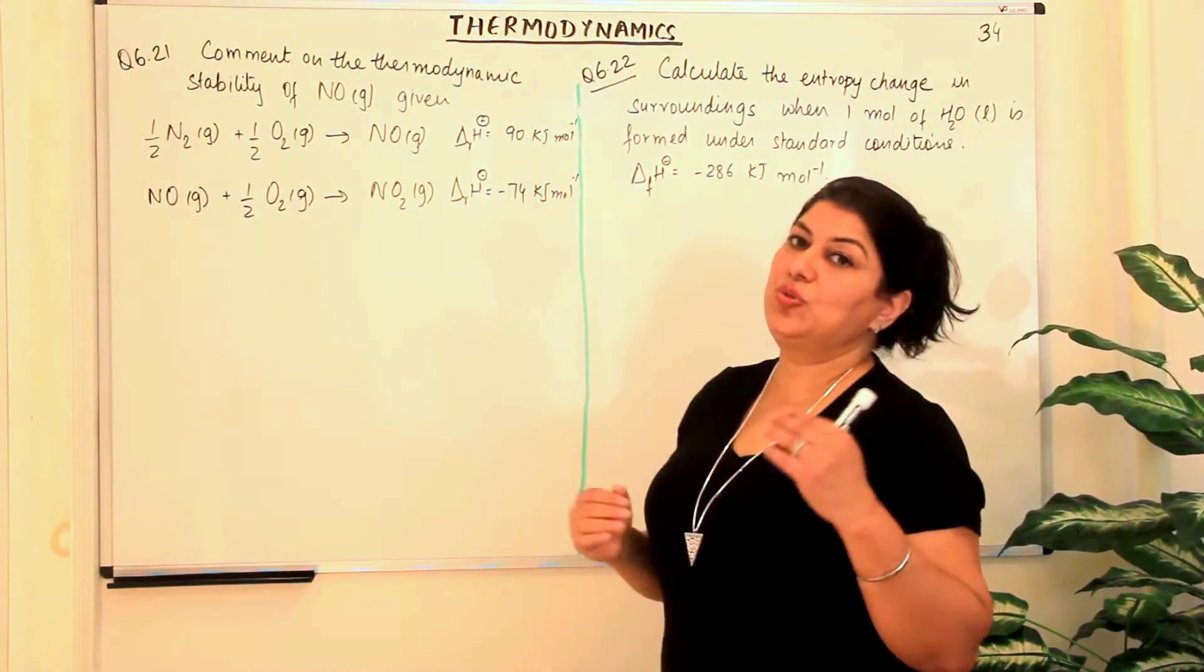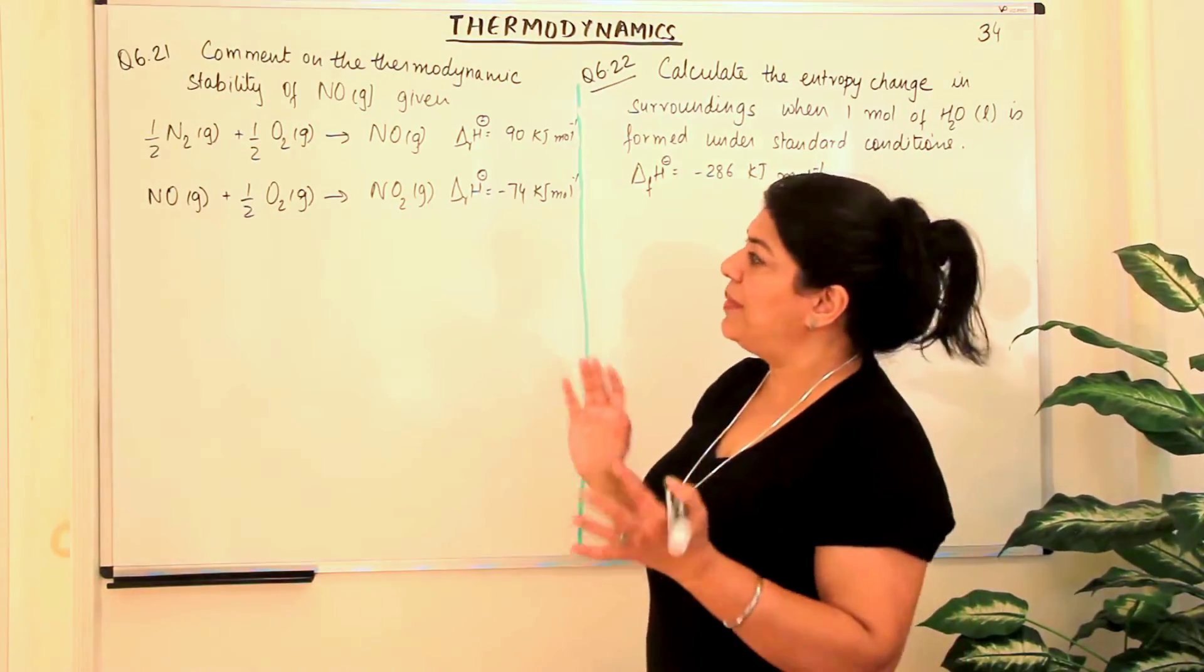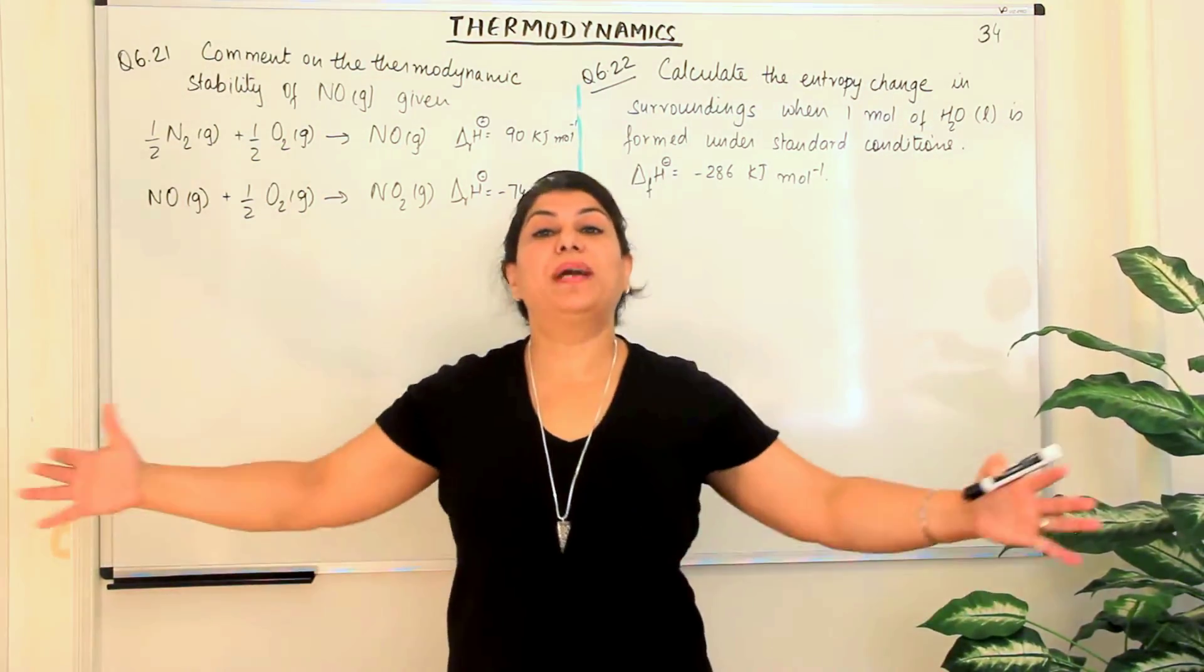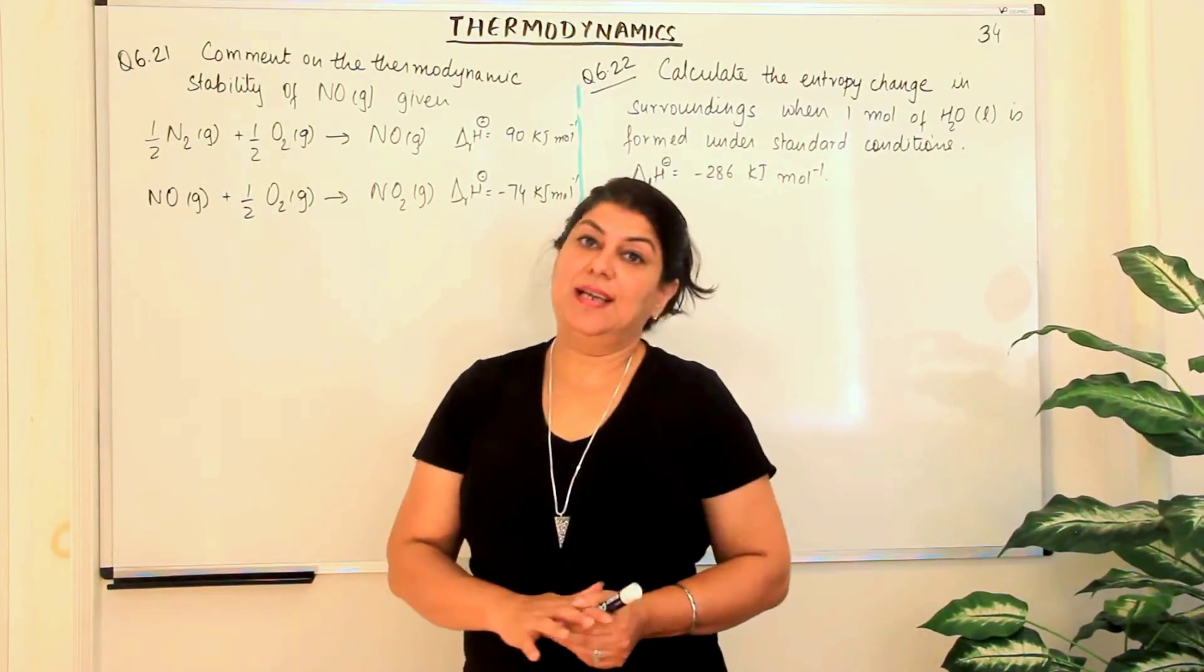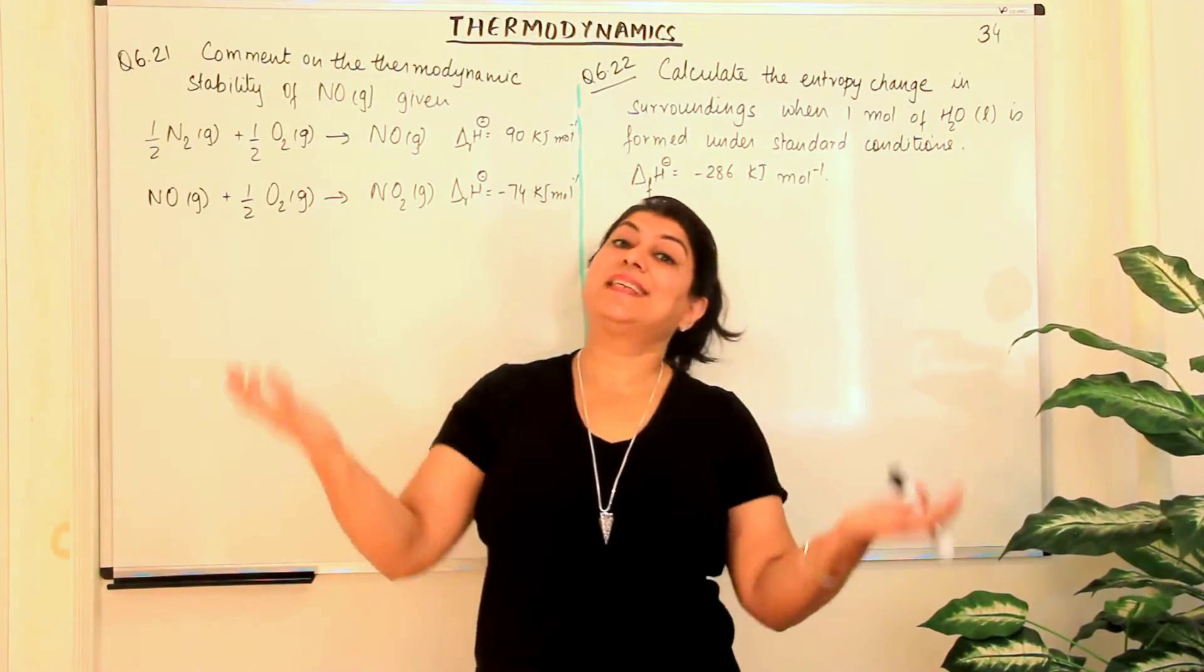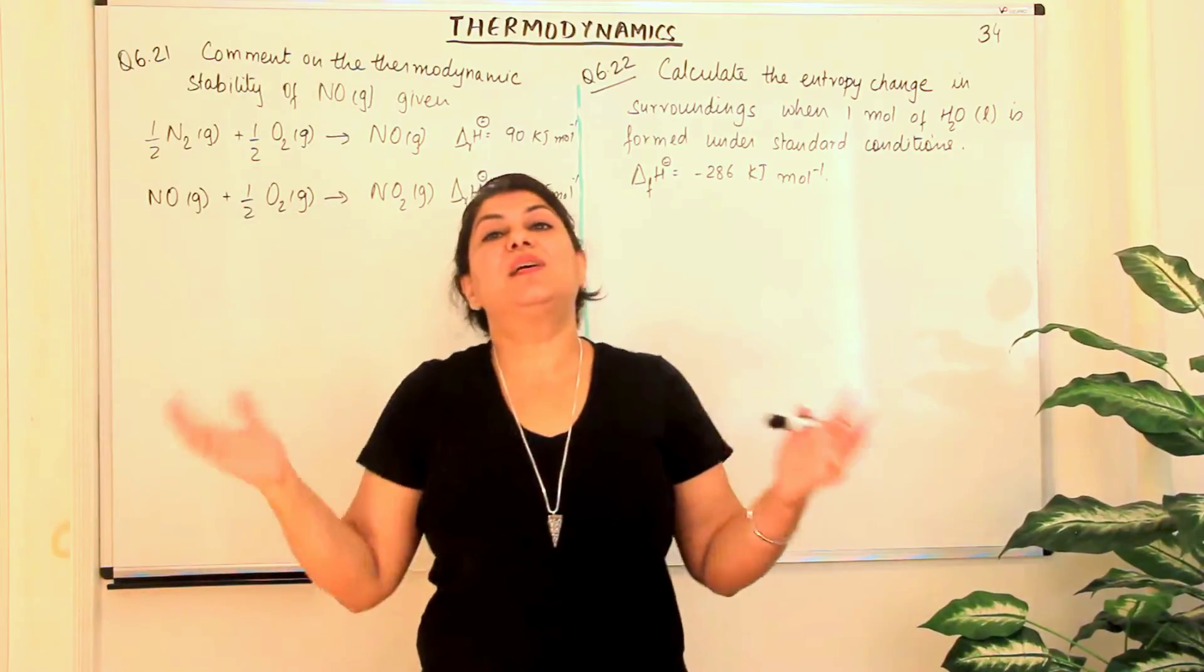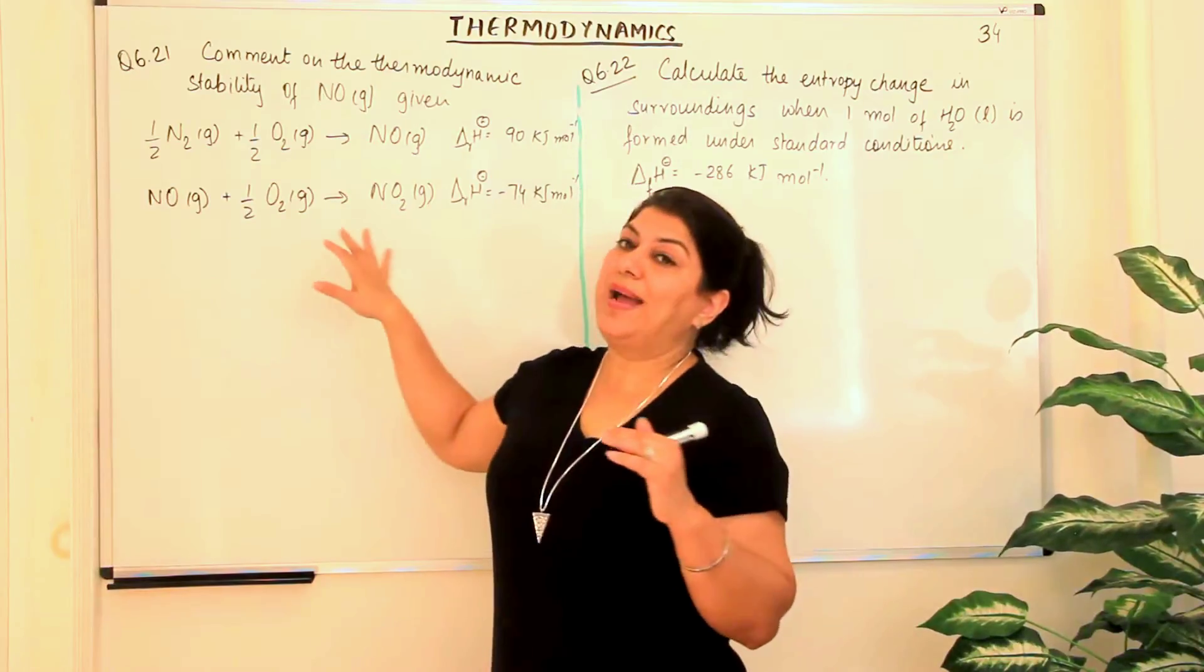Now, looking at this data, we have to determine whether NO is stable or not in comparison to the other substances present in the reaction. We know that in thermodynamics, whenever heat is given out by your system, it leads to a lower energy state and stability. That is thermodynamically feasible. But if a reaction is endothermic, it is gaining energy, then the energy of the system is increasing, and that is thermodynamically unstable.